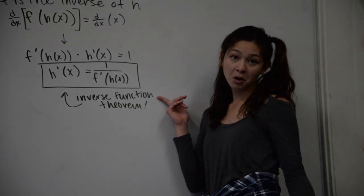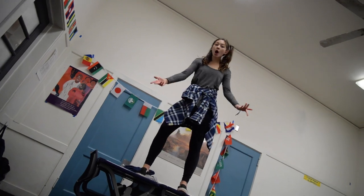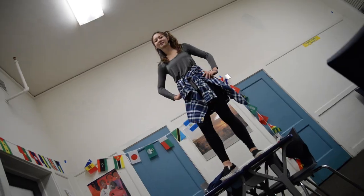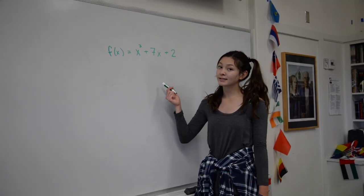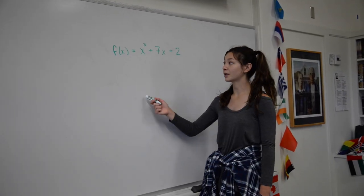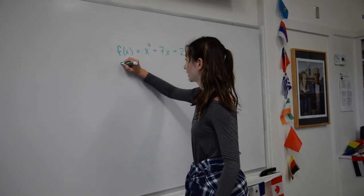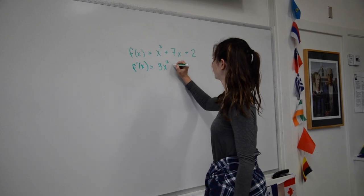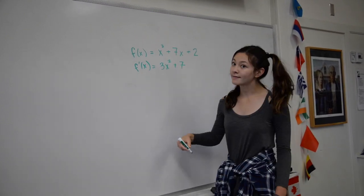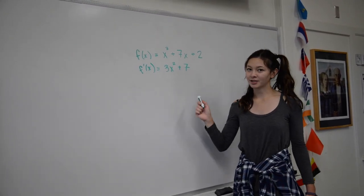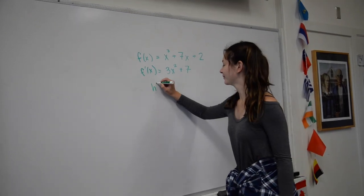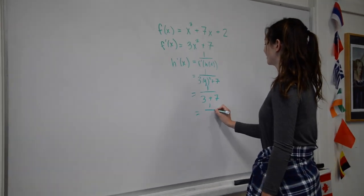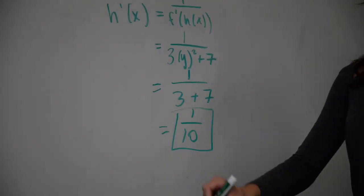This is actually pretty helpful — you should probably memorize it. Oh, so you want to see it in action? You don't need tickets for this main attraction. So if you're trying to get the derivative of the function that is inverse to f of x, first you get the derivative of f of x, and then you just plug it into the function that we just derived, which is plus seven — which is one over ten. Yeah!